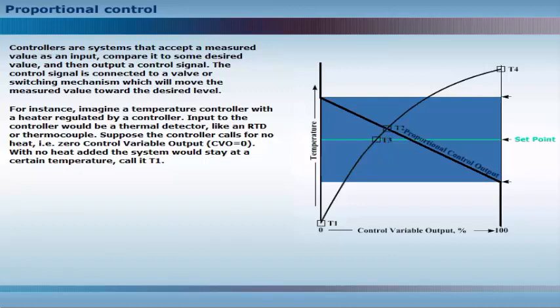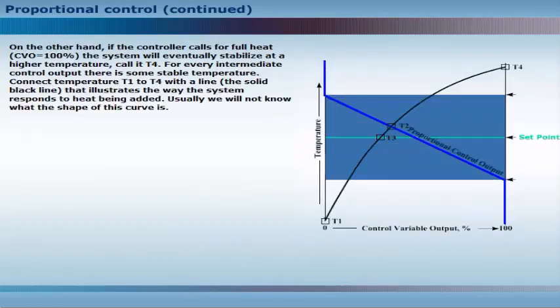Call it T1. On the other hand, if the controller calls for full heat, the system will eventually stabilize at a higher temperature. Call it T4. For every intermediate control output, there is some stable temperature. Connect temperature T1 to T4 with a line that illustrates the way the system responds to heat being added. Usually, we will not know what the shape of this curve is.